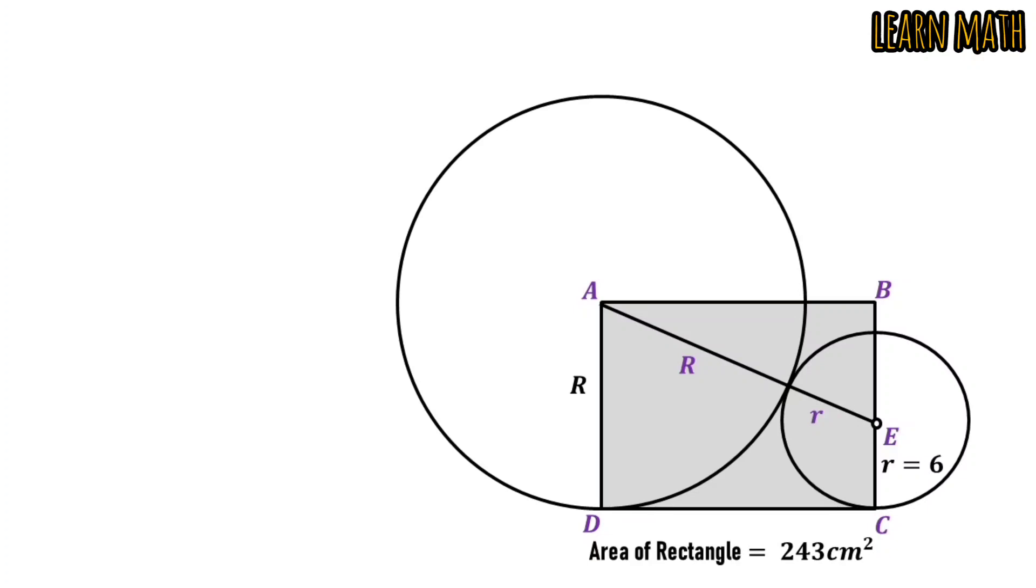So, AE is equal to capital R plus small r. Similarly, BE is equal to capital R minus small r.